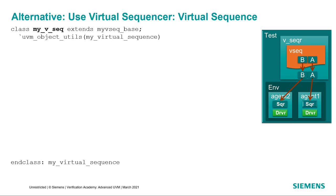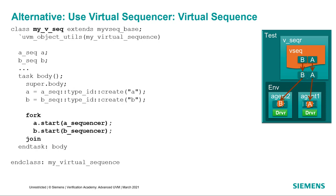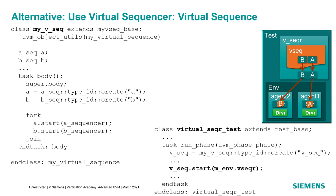Then we extend the base virtual sequence to our specific virtual sequence for this test. We declare the two sub-sequences that we'll be running, and then in the body method we create instances of our two sub-sequences and start those sequences on the sequencer handles we assigned in the base class. Up in the test, all we have to do in the run phase is create the virtual sequence and start it on the virtual sequencer in the environment. All of the sub-sequencer paths have already been set in the virtual sequence base class and the environment. It's really up to you which method you choose. The first way — with the initVSeq method defined in the test — provides a little more flexibility and simplifies the hierarchy. The virtual sequencer method lets you reuse the virtual sequencer in any environment that contains the desired sub-sequencers, but you'll have to make the assignments in your environment and instantiate the virtual sequencer. It really comes down to whether you want to specify the sub-sequencers in the test or in the environment.